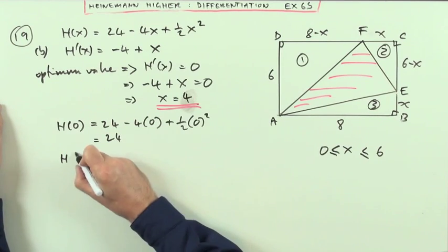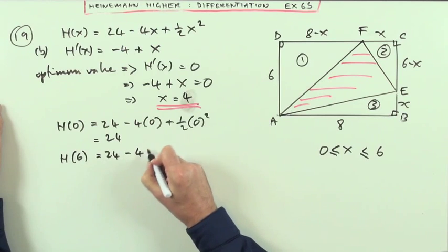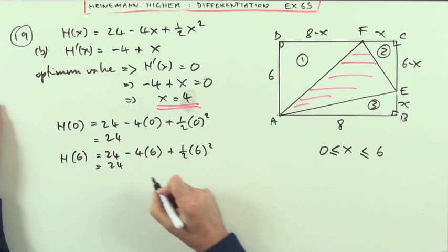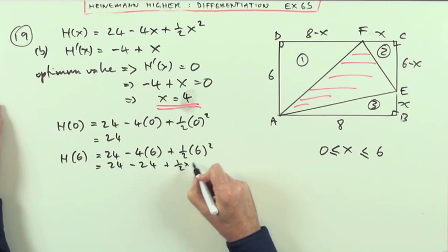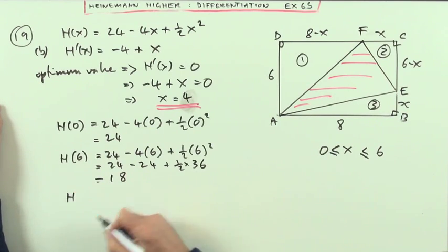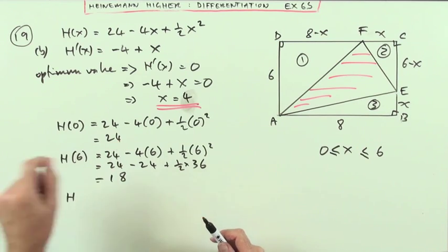What's the value at the other extreme? What's the value at 6? Well, that'll be 24 minus 4 times 6 plus a half of 6 squared. So that's 24 minus 24 plus a half of 36. So that's going to be 18. So far, my contenders are smallest area, 18. Biggest area, 24.